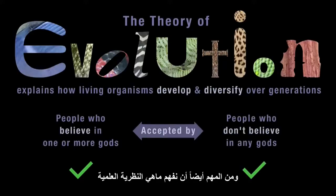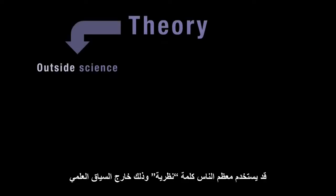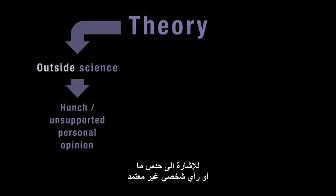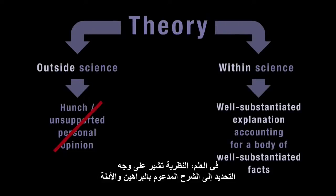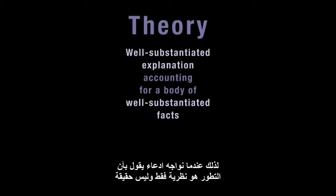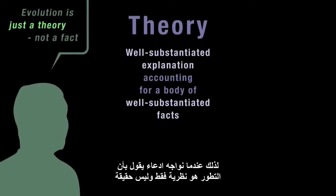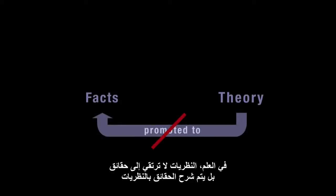It's also important to understand what a scientific theory is. Outside science, people often use the word theory to refer to a hunch or unsupported personal opinion — this is not what the word means in science. In science, a theory refers specifically to a well-substantiated explanation which accounts for a body of well-substantiated facts. So whenever we encounter a statement like 'evolution is just a theory, not a fact,' this tells us that whoever made the statement is not using the terms correctly. In science, theories don't get promoted to facts.